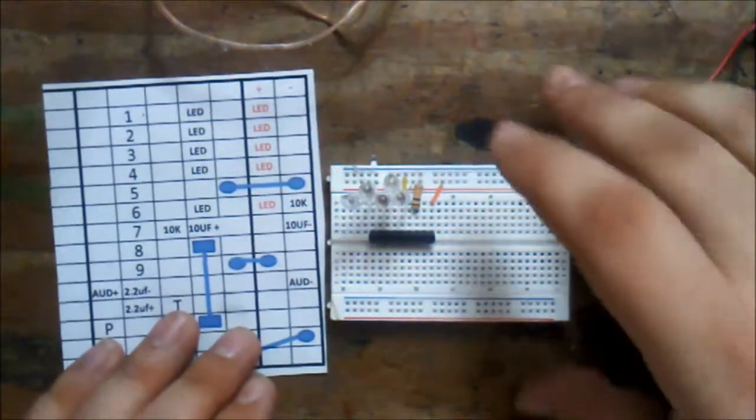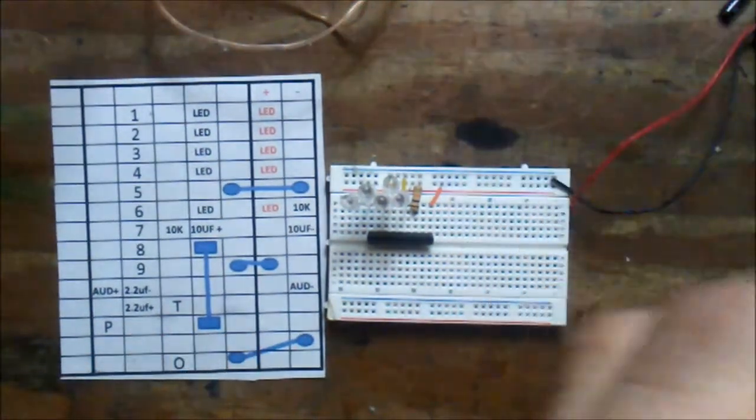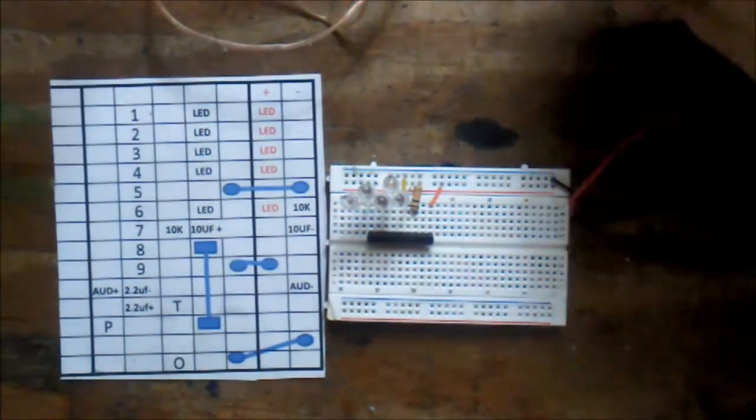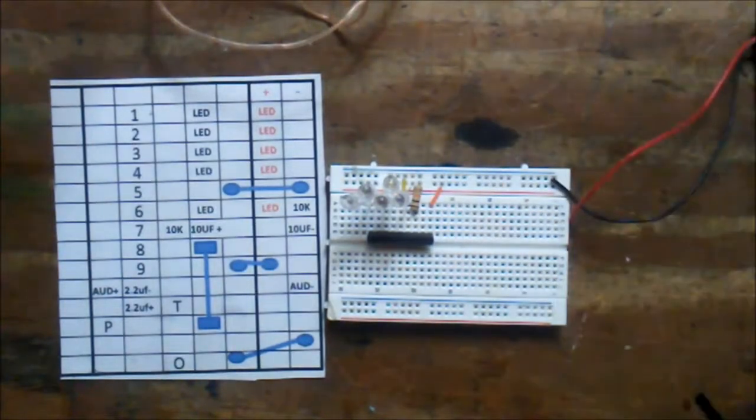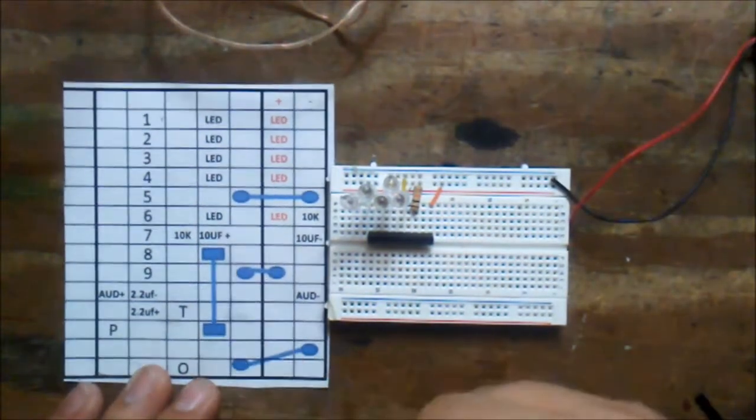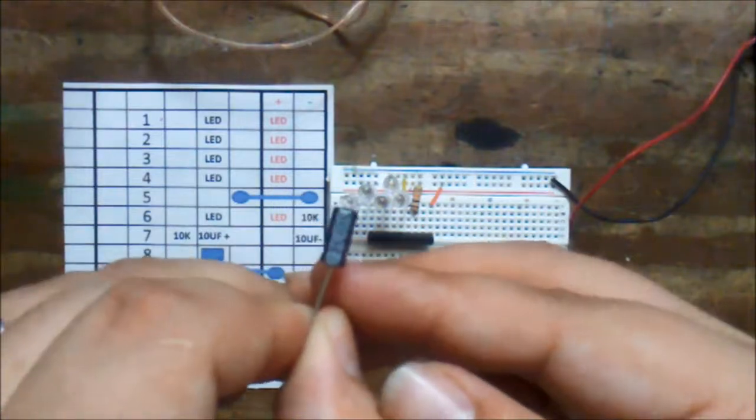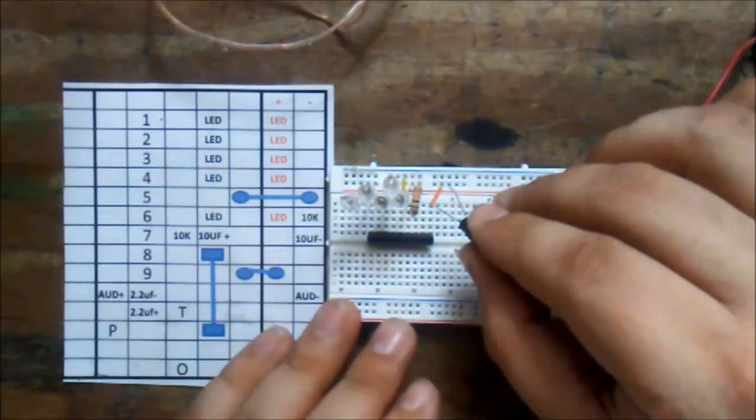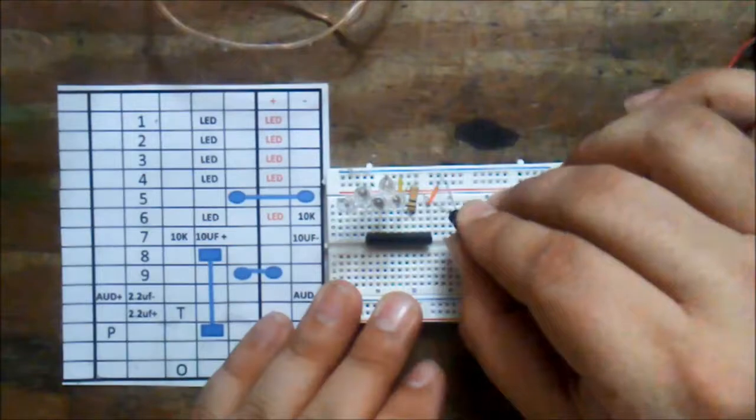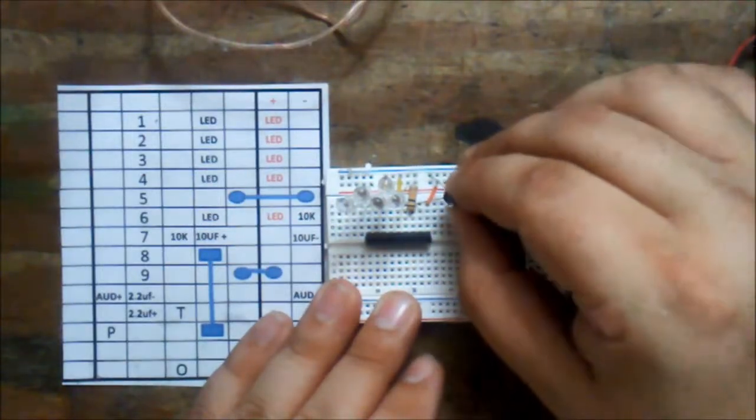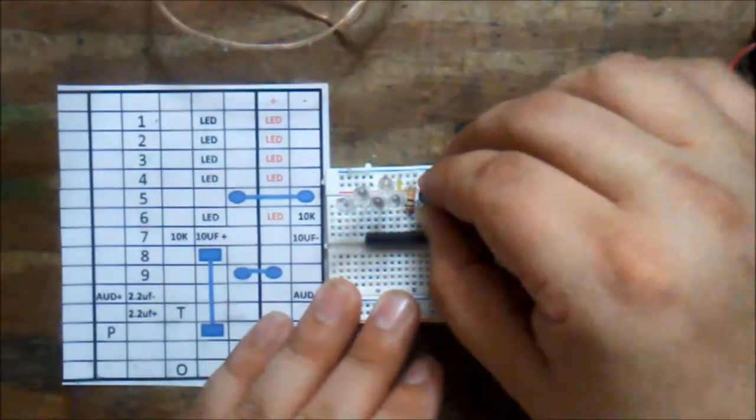Then the next one, you need the 10 microfarad. Remember, it's the positive and the negative. Remember, the negative of electrolytic has this nice little stripe. So, let's go to negative, there we go.